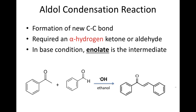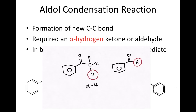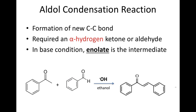This reaction requires alpha-hydrogen. Alpha-hydrogen is hydrogen that is attached to an alpha-carbon. In this reaction, acetophenone has alpha-hydrogen but benzaldehyde doesn't. In a base catalyst, the reaction proceeds through an enolate pathway.